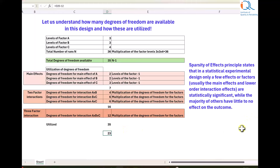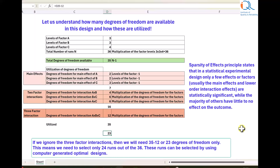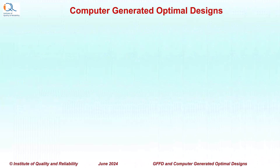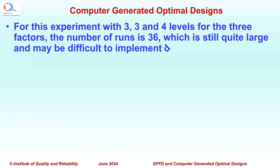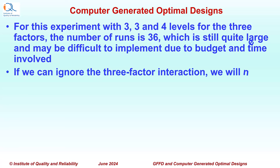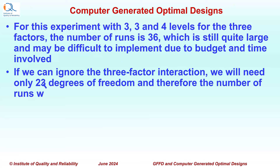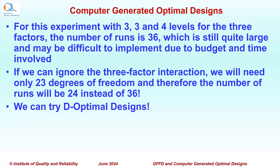If we need only 23 degrees of freedom, then we will need only 24 runs. The question is: which 24 runs should we select if we want to evaluate the main effects and two-factor interactions? That can be decided using computer-generated optimal designs. For this experiment with 3, 3, and 4 levels for three factors, the number of runs is 36, which may be difficult to implement due to budget and time constraints. If we can ignore the three-factor interactions, we will need only 24 runs instead of 36. We can try D-optimal designs in such cases.